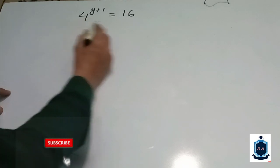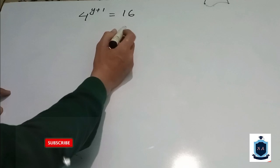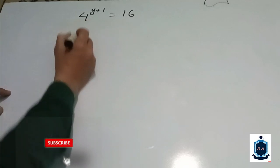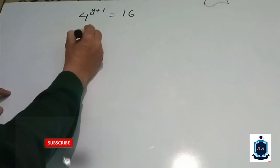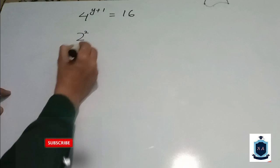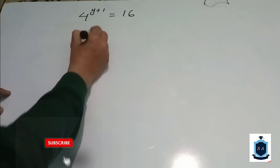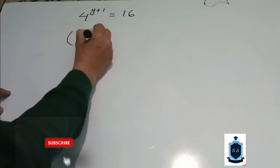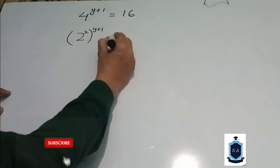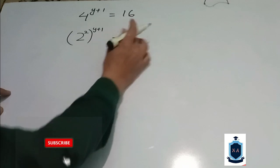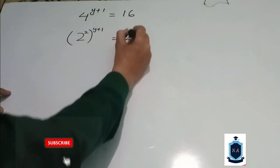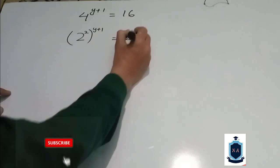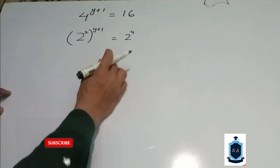Here you can see that if I write 2 power 2, then bracket (y plus 1), which is equal to 16. If I write 16 as 2 power 4, here you can see that if I open the power the answer will be 16.